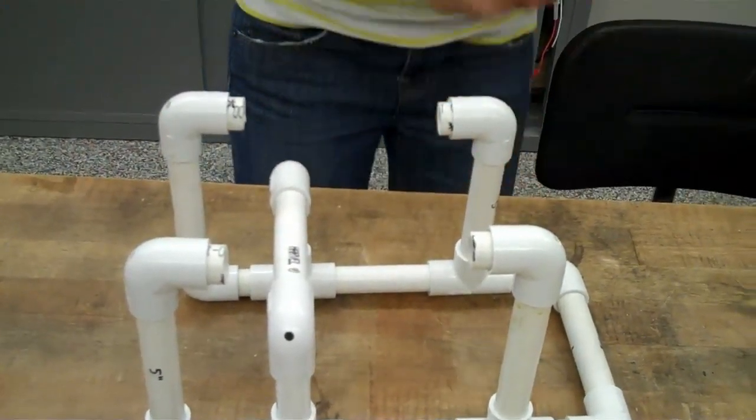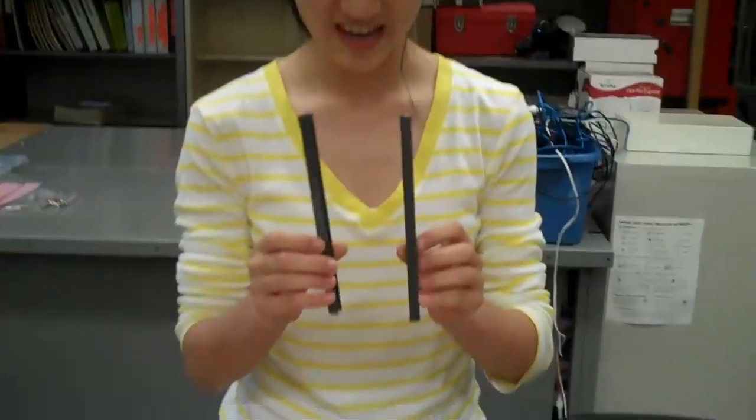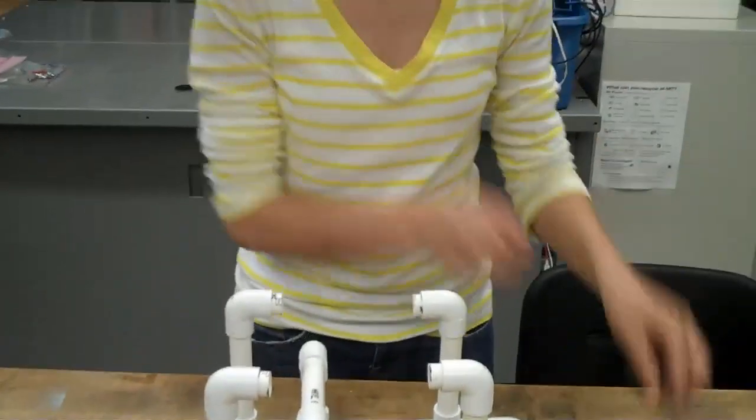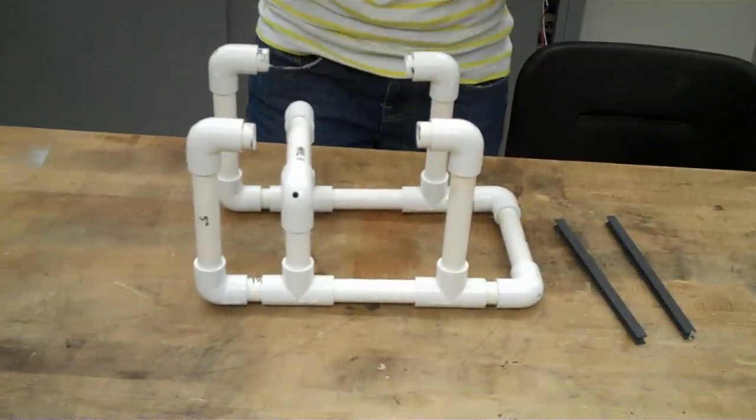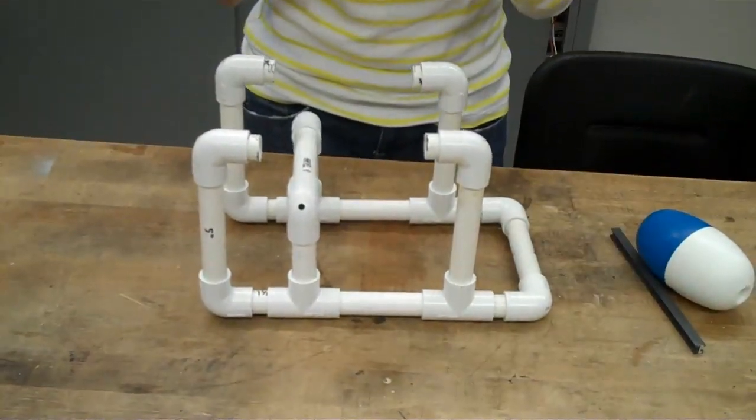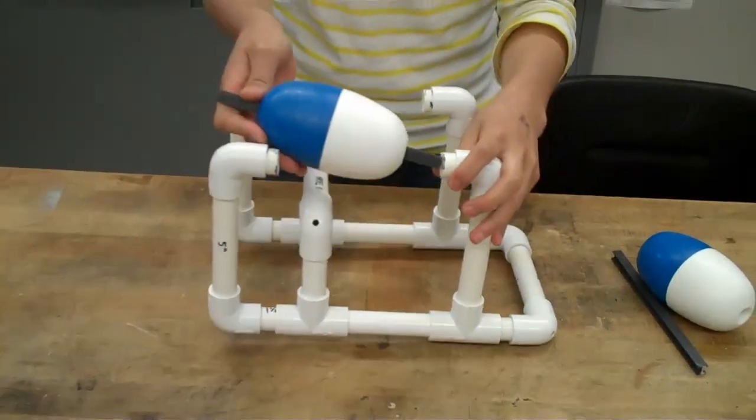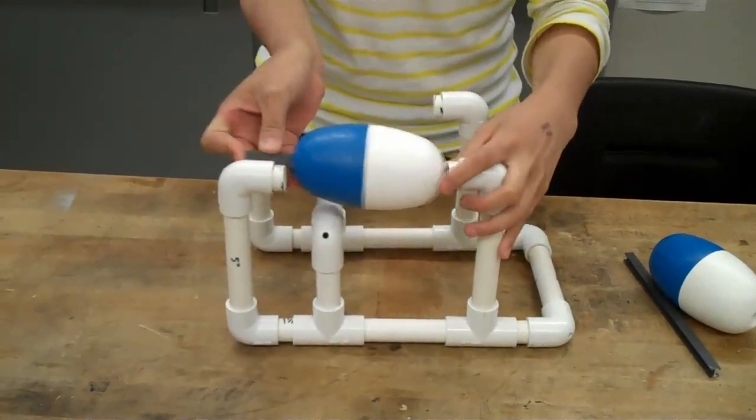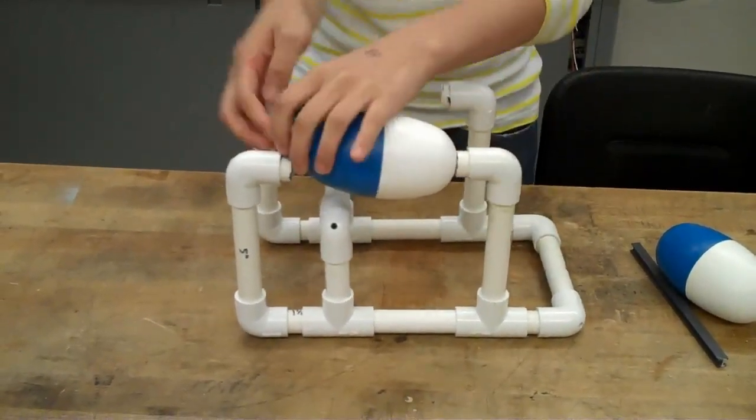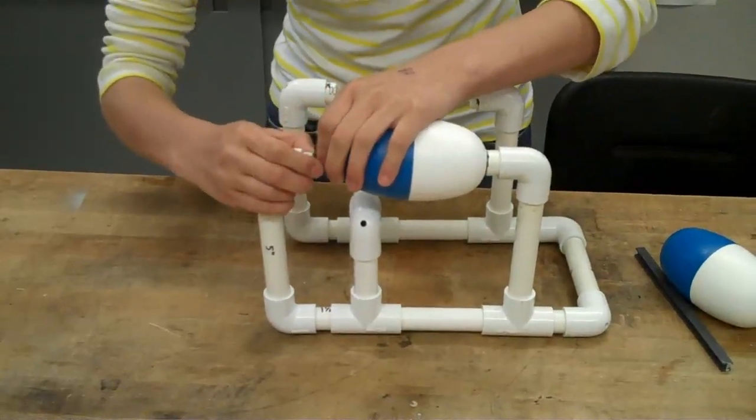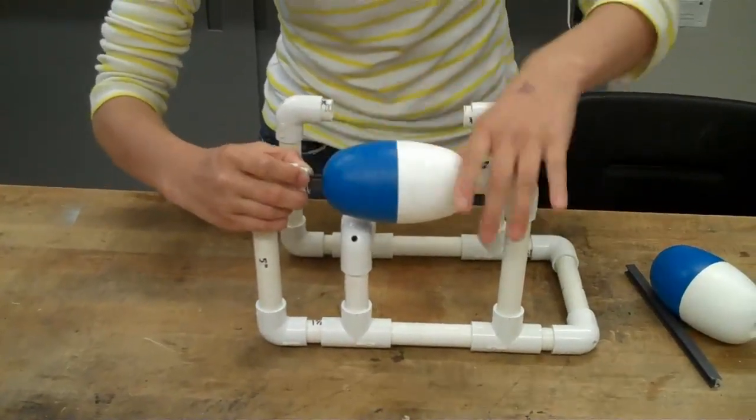Now, here we have two rods, each beam, and then we have two buoys. We're going to slide each beam through each of these and insert it like this. Push it through to one end, and then you can pull this open slightly and stick in the other end.